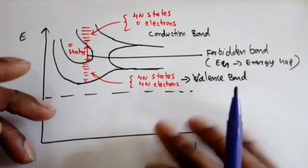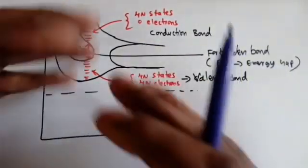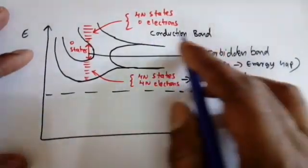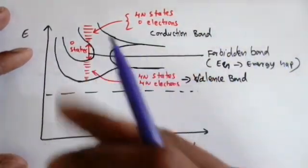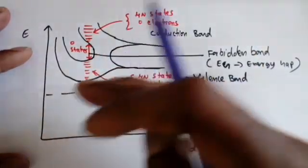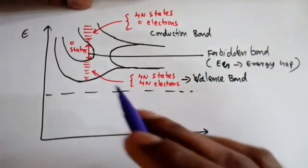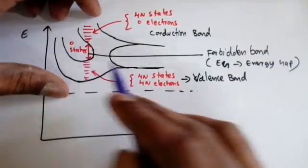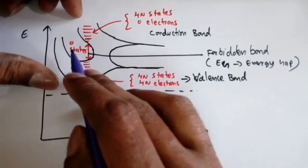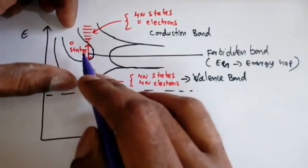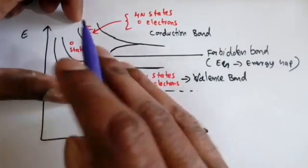When we bring atoms closer and closer, some changes happen in the crystal. The higher energy levels — that is, the valence orbits or valence levels — split into energy bands. When they split into energy bands, the upper energy band is called the conduction band and the lower energy band is called the valence band. These two energy bands are separated by an energy gap called E_g, and in this energy gap there are no allowed states — it is called the forbidden band.